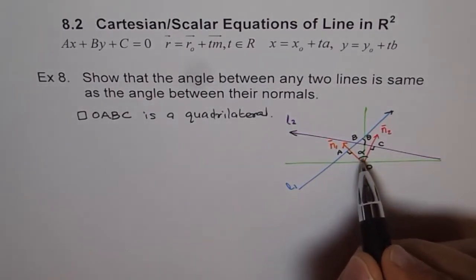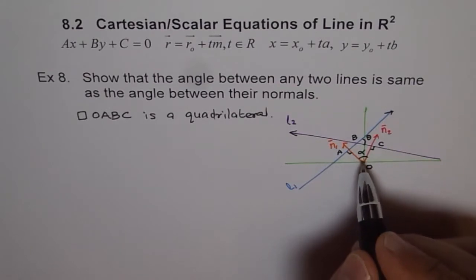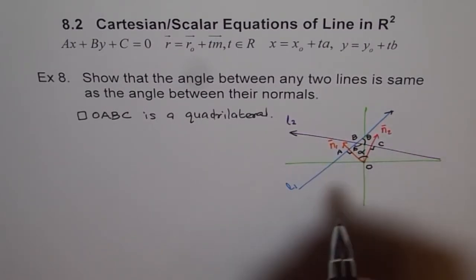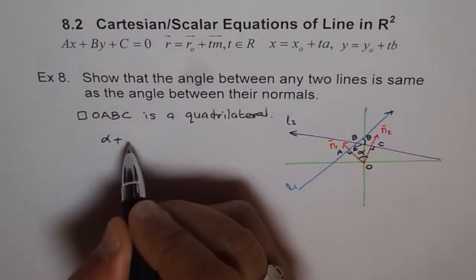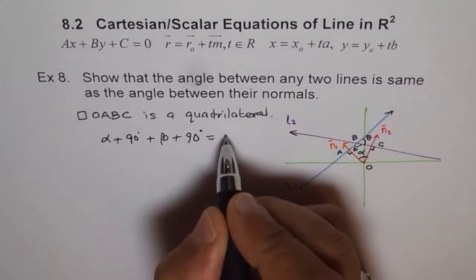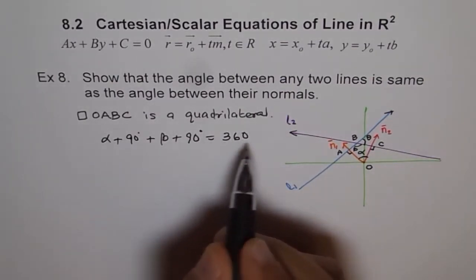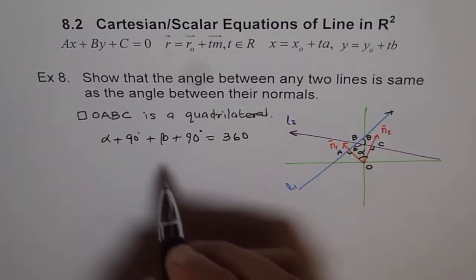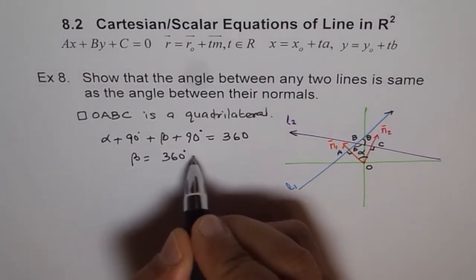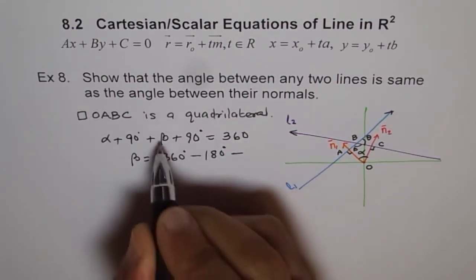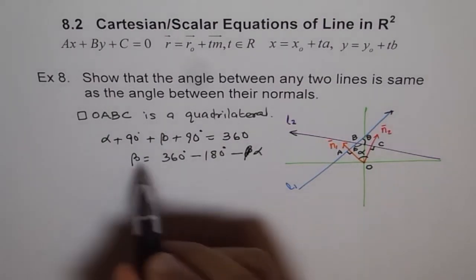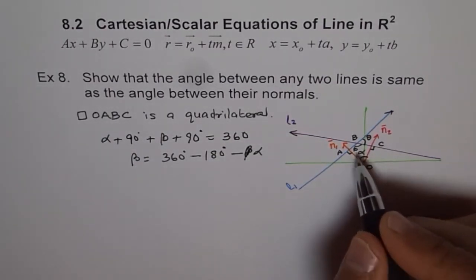The sum of interior angles of a quadrilateral is 360 degrees. So we have: alpha plus 90 degrees plus beta plus 90 degrees equals 360 degrees. That means beta equals 360 degrees minus 180 degrees minus alpha, which gives us beta equals 180 degrees minus alpha.